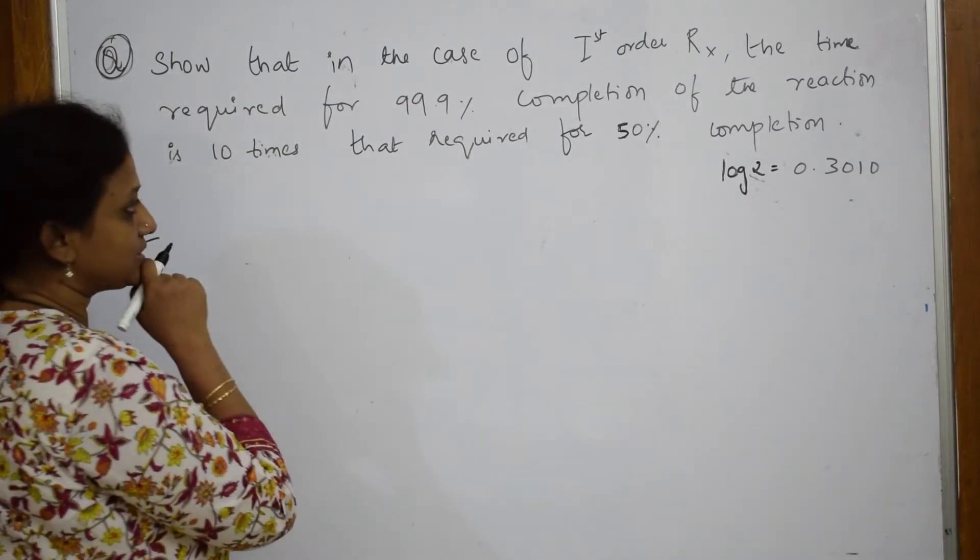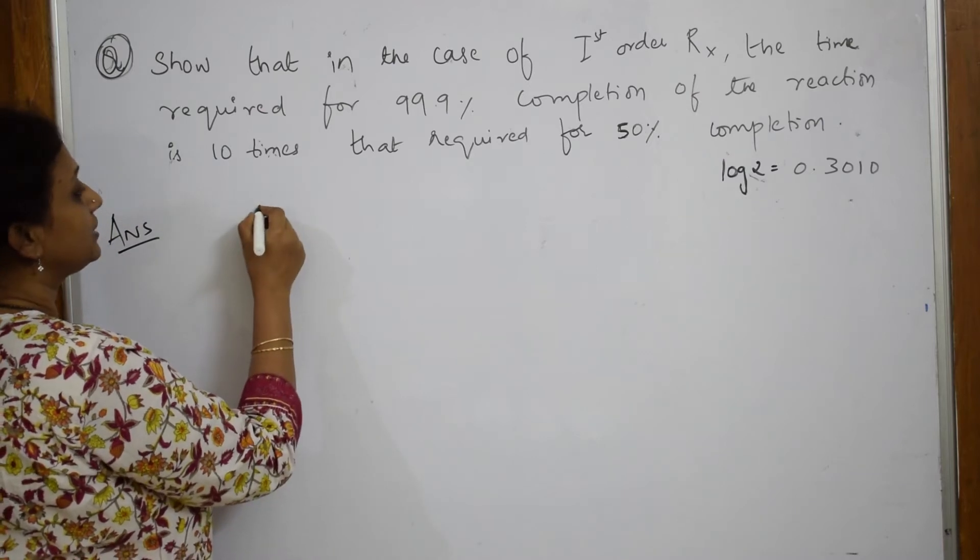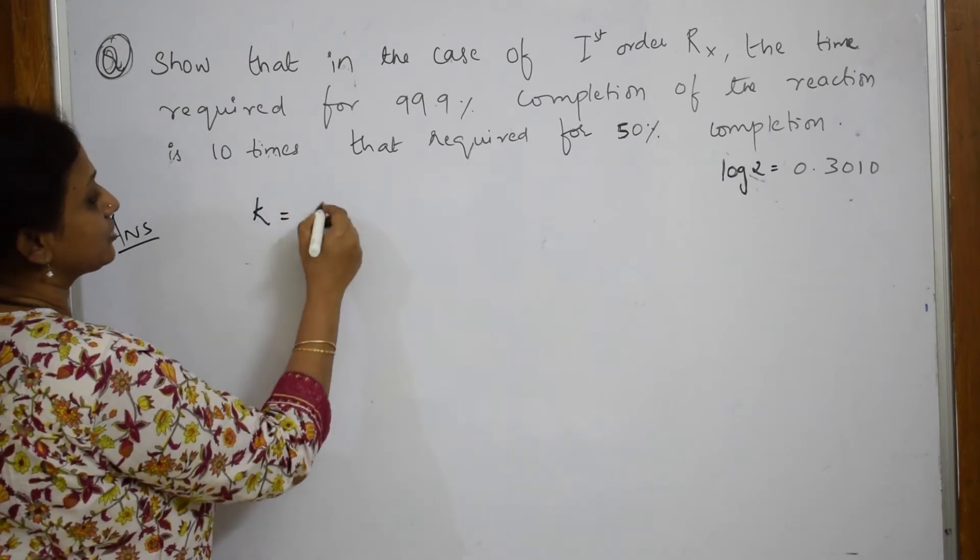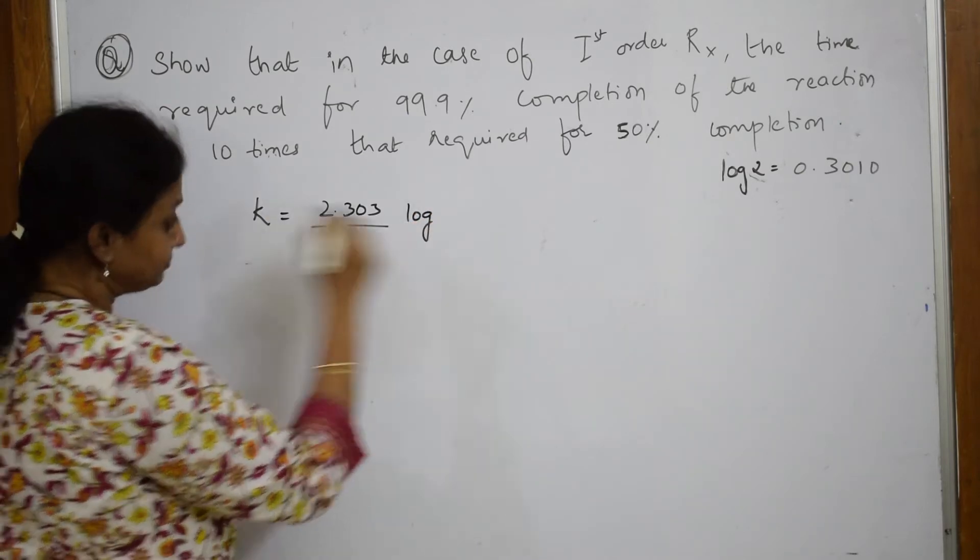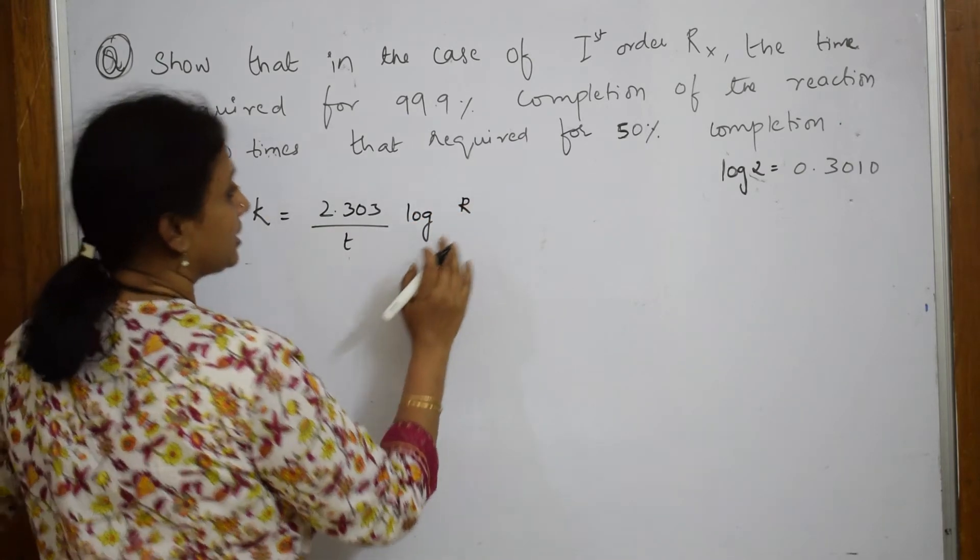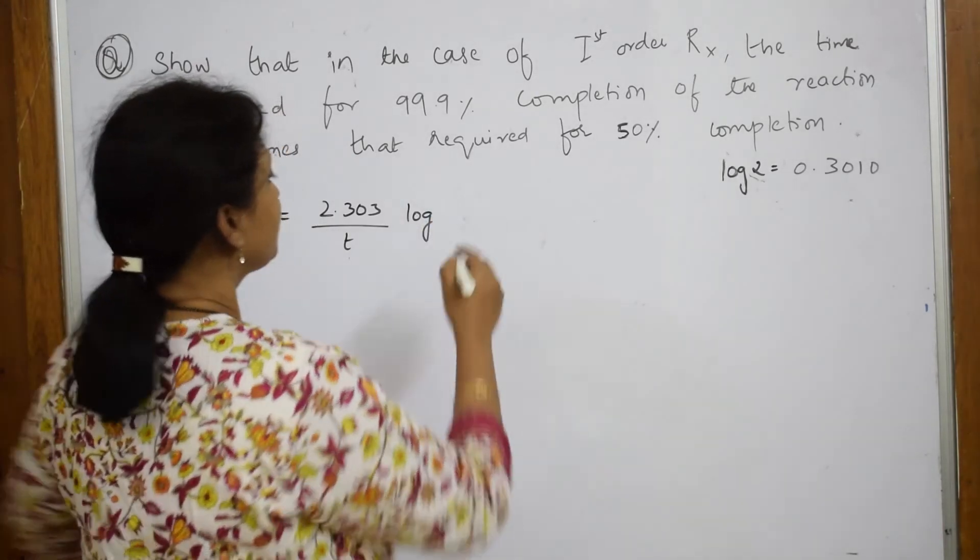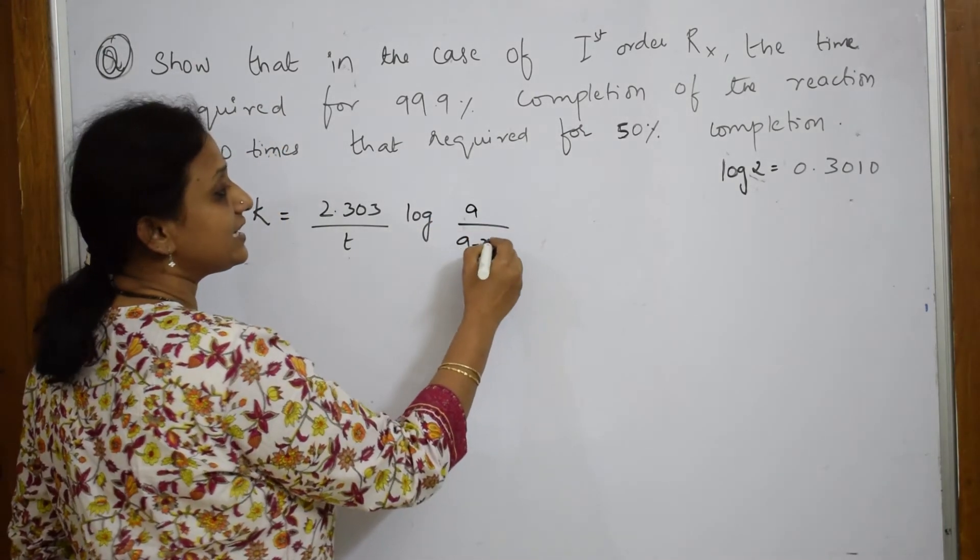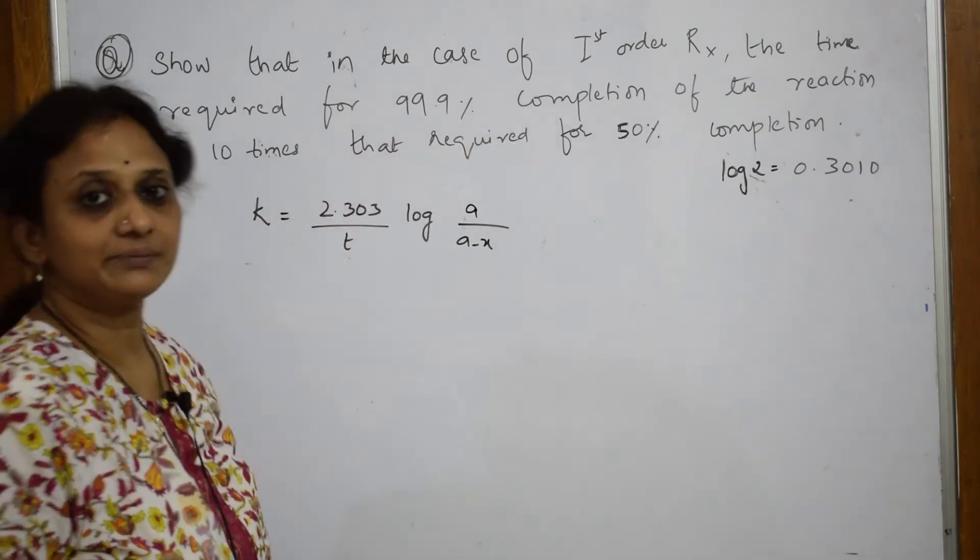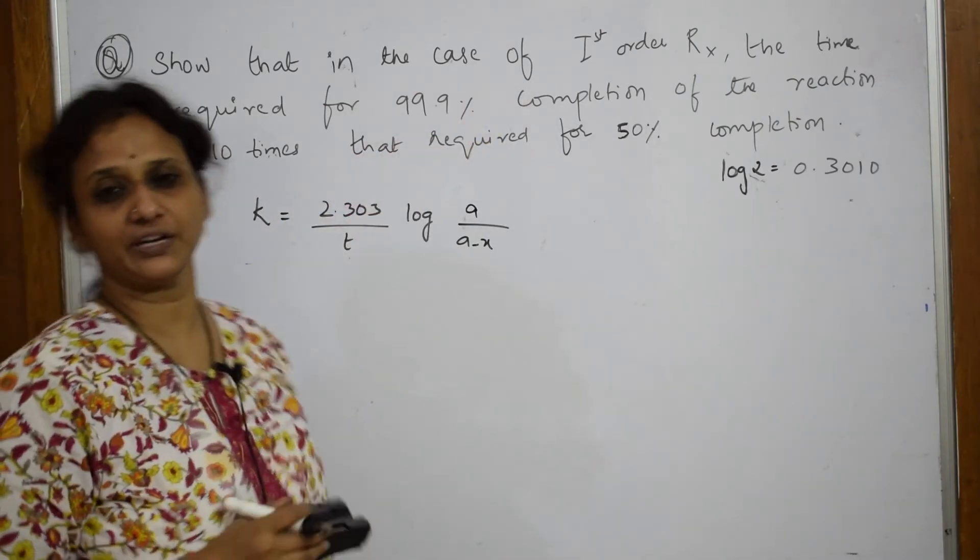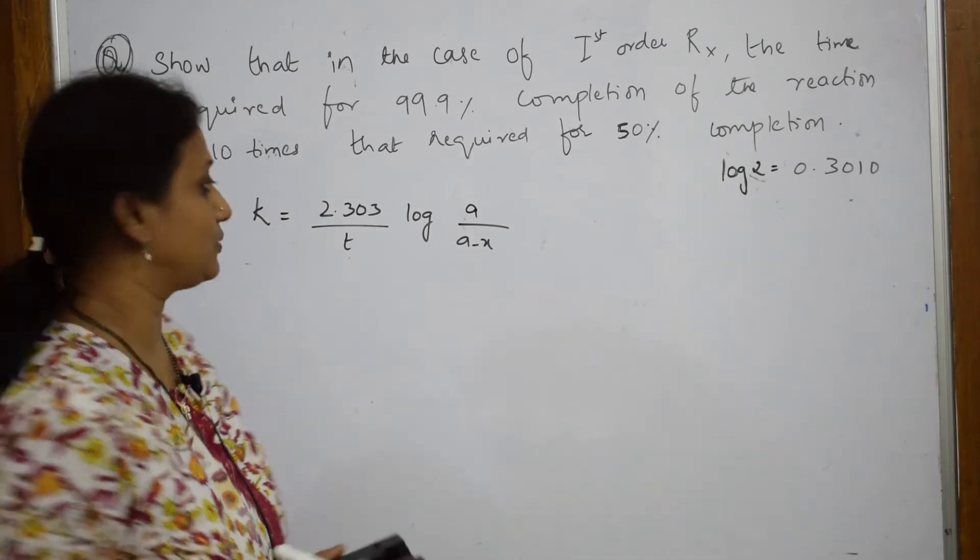I have to prove that the time required is equal to 10 times t_half. Let us write what is given. First, the rate constant equation: k = 2.303/t log(a/(a-x)). I have to write in terms of a by a minus x. Why? Because a part of it is completed. I cannot use initial and final volume, so I picked this reaction equation.